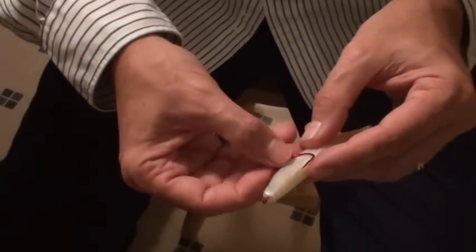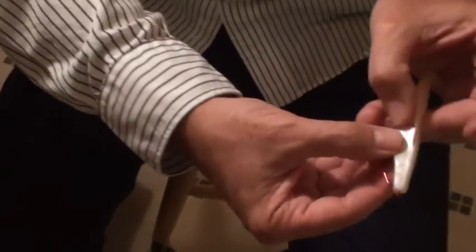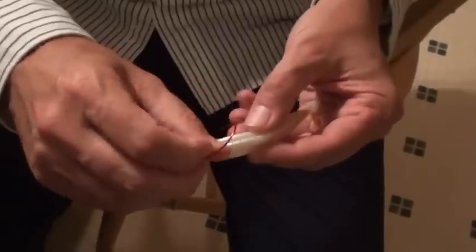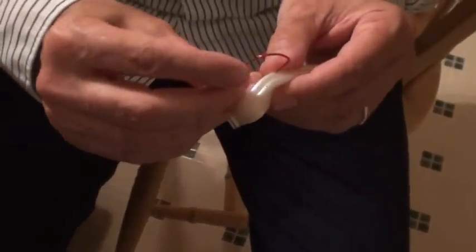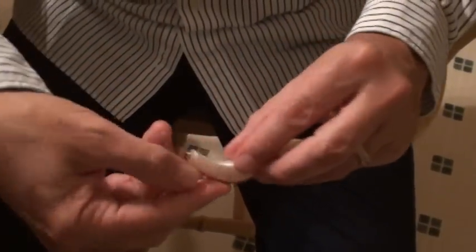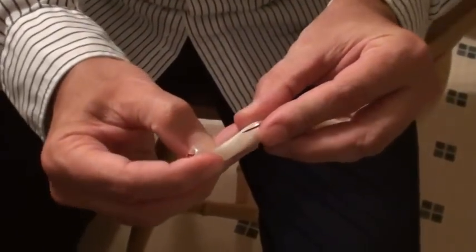You put your finger there to know where to come through. Pop that through there. That comes out the top like that. If you want to make it real weedless, you take the bait and you bury the hook right in the top.